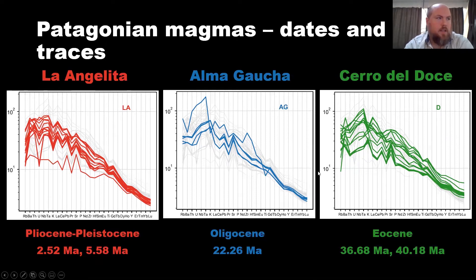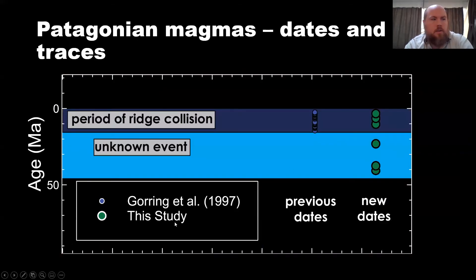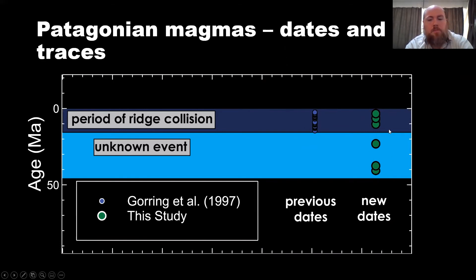There's a problem, however, because magmas from the El Maguacha formation and the Cerro del Doce formation also have these very enriched, very similar OIB trace element patterns. However, these magmas are from the Oligocene — 22 million years ago — and the Eocene — 37 and 40 million years ago. We have evidence of the eruption of very similar types of magma much older and into the Eocene, well before the ridge collision period.